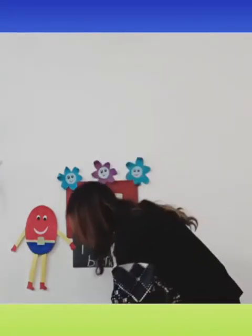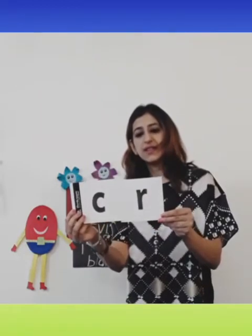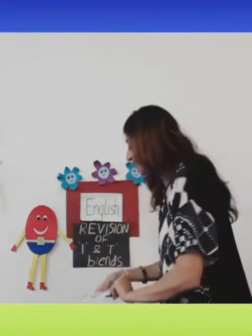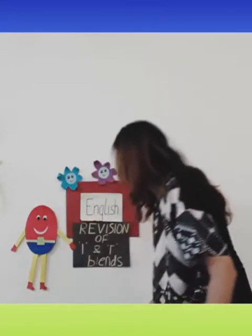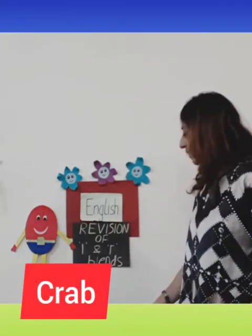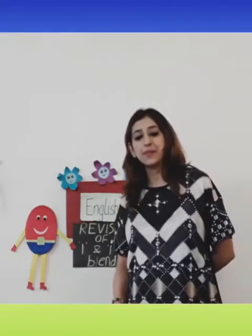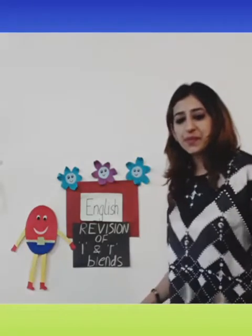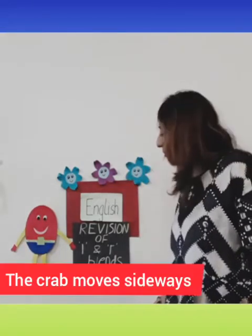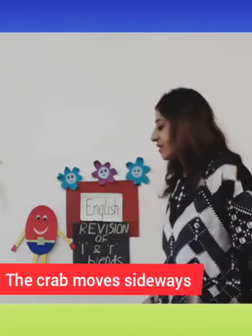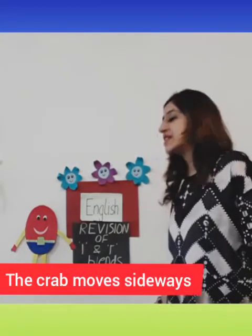Now our next word. What sound does this letter make? K. And this letter — R. Together we hear the sound 'cruh'. So let's see what word we can form with this sound. The word is 'crab'. And what sentence can we make with the word crab? The crab moves sideways.